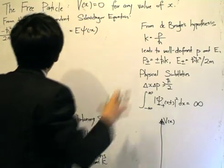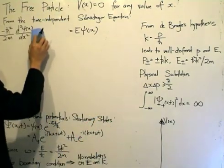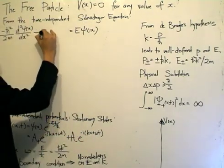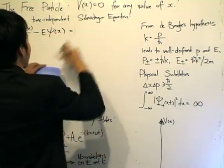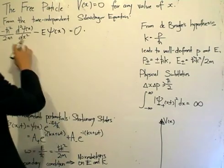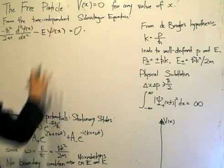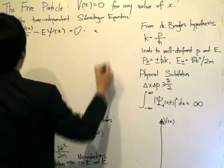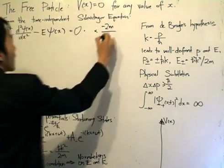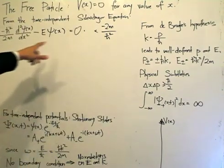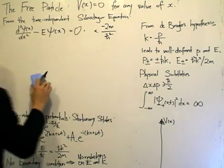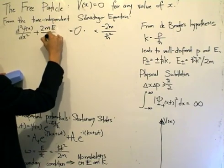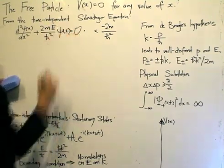We want to get the Schrödinger equation into one of the standard forms. I can bring the minus E over: minus energy multiplied by the wave function psi gives minus E·psi(x), and the other side becomes zero. To eliminate the coefficient from the second derivative, I multiply throughout by minus 2m divided by h-bar squared. That clears the coefficient, giving us plus 2mE divided by h-bar squared, multiplied by psi(x).